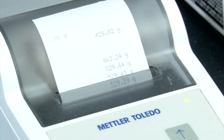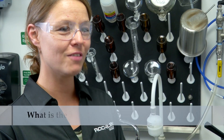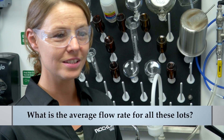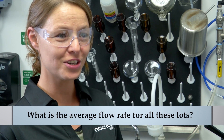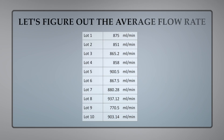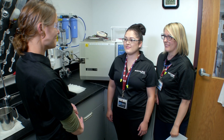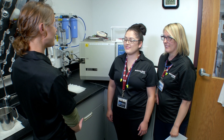We have to make sure they're exactly what our customer specifies. So where do we start? First, we start with an average. What was the average flow rate for all of these lots? Is the average within our customer's specifications? To get an average, you total them all and then divide by the number of lots: 8708.24 divided by 10, or 870.824 milliliters per minute.